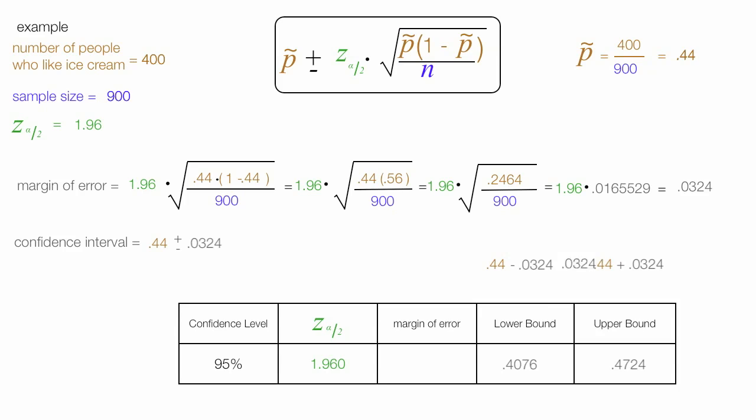And the margin of error is 0.0324. You can roughly say the lower bound is 40.7%, and the upper bound is 47.2%.